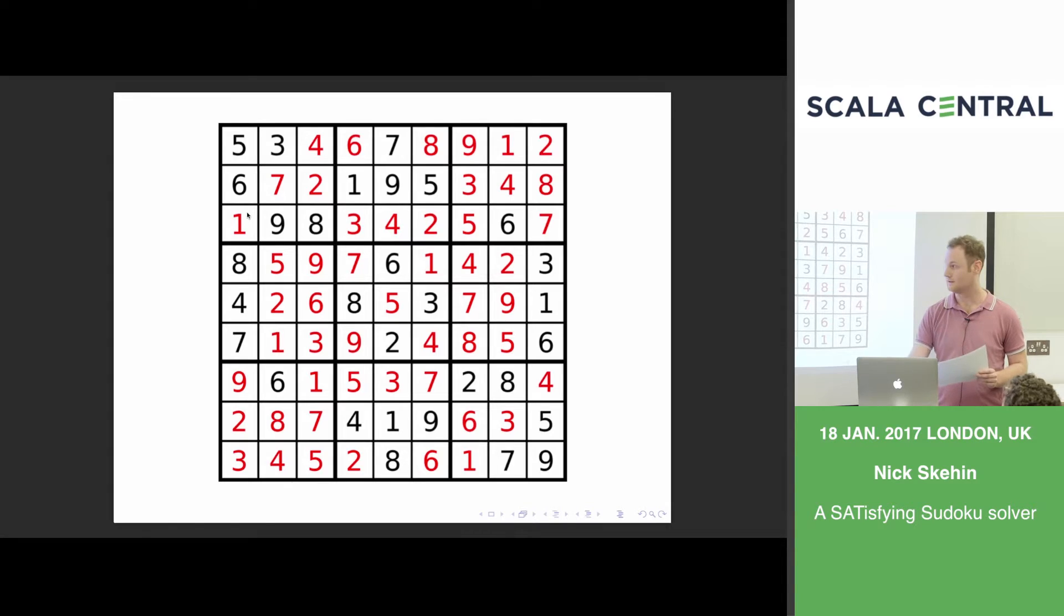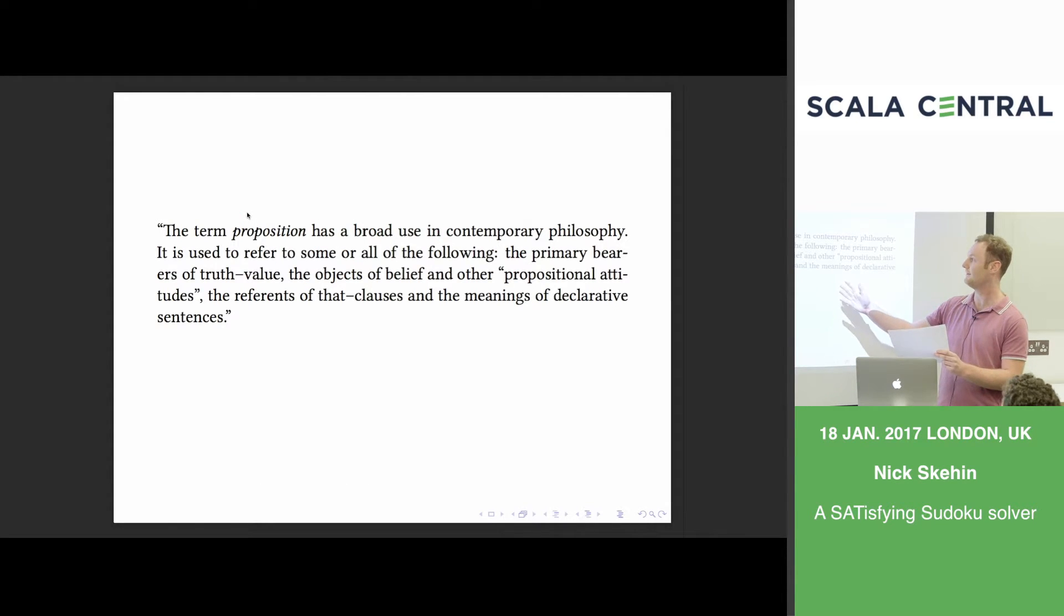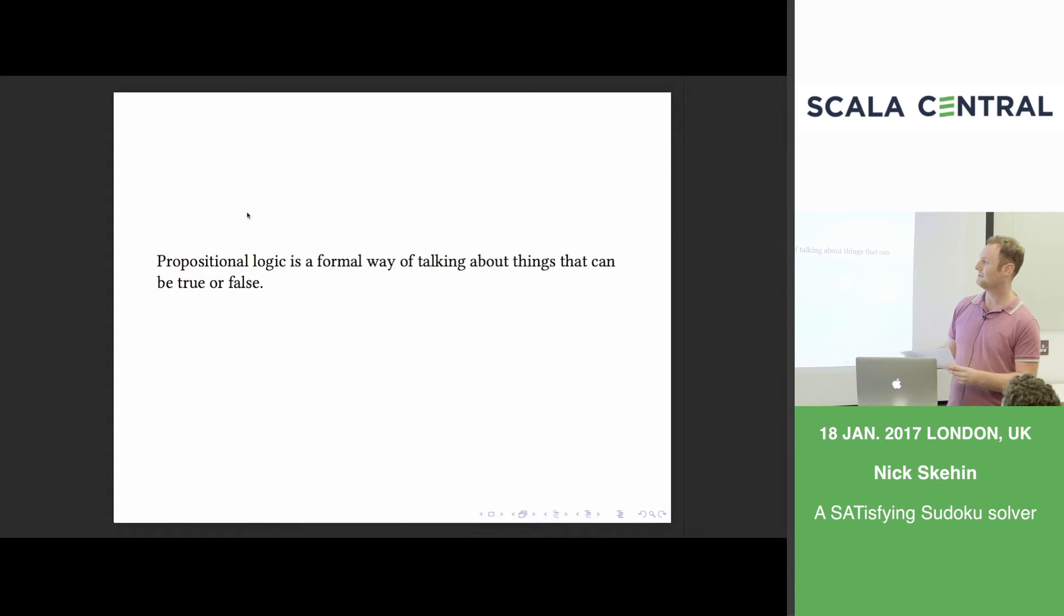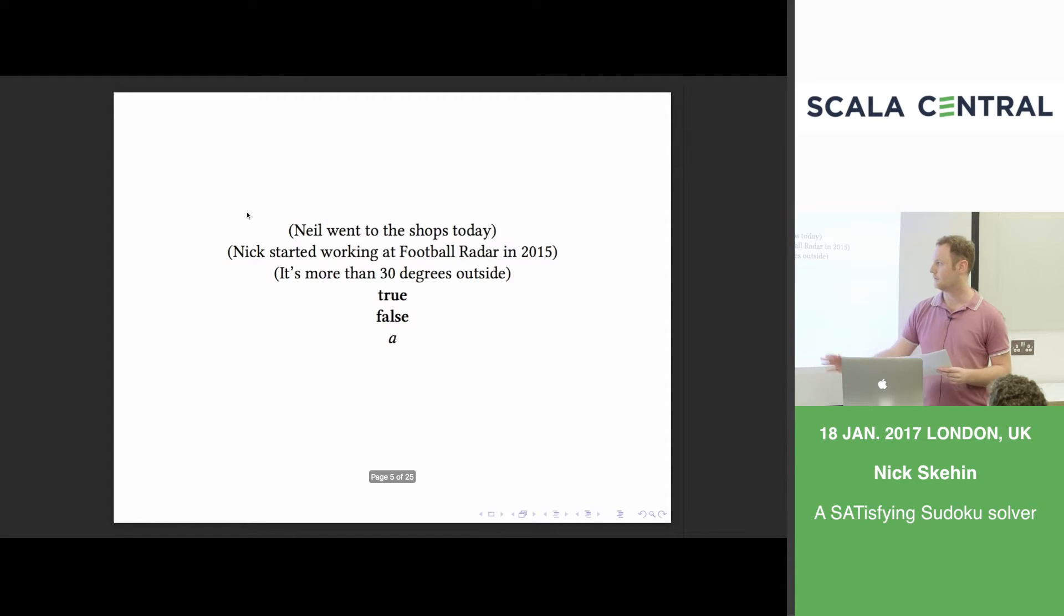So specifically a form of logic called propositional logic. This is a definition of what a proposition is basically and I don't think it's that helpful really. So maybe I would use this one. All proposition logic really is, is just a way of talking about things that can be true or false and we just build a logic out of just true and false. It's kind of like booleans in a programming language if you had a programming language just with booleans really.